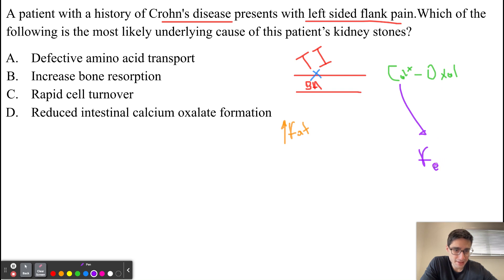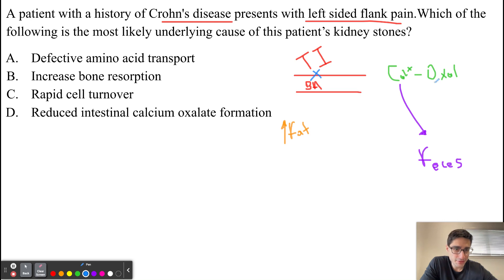In Crohn's disease, because of the accumulation of fat, calcium — instead of binding to oxalate — forms a complex with fat. So now we have a calcium-fat complex, which means oxalate is left by itself. This ultimately increases free oxalate in the intestines.